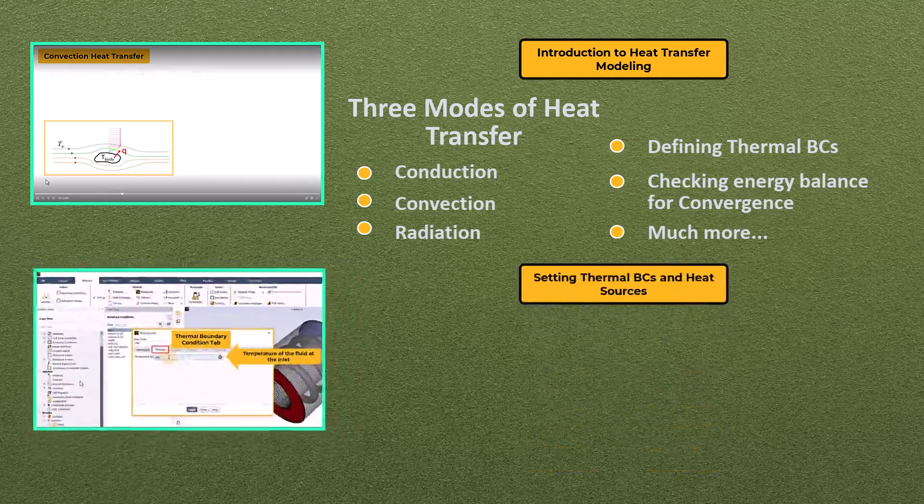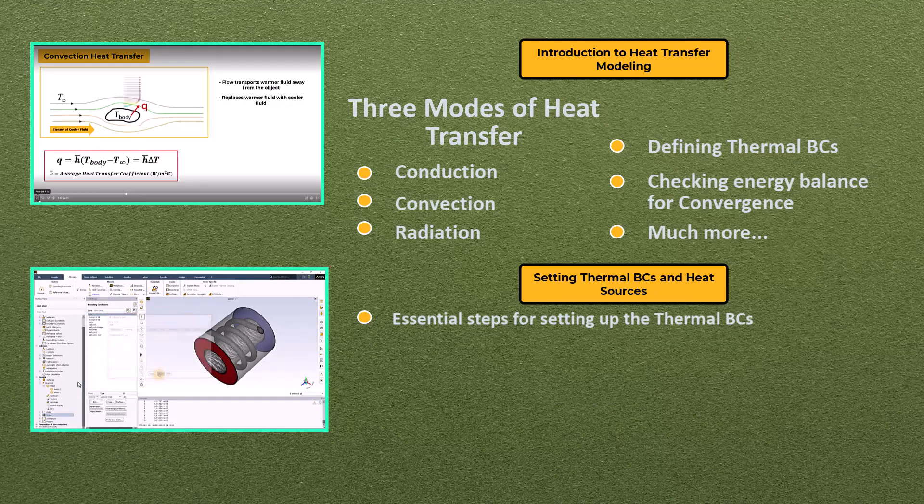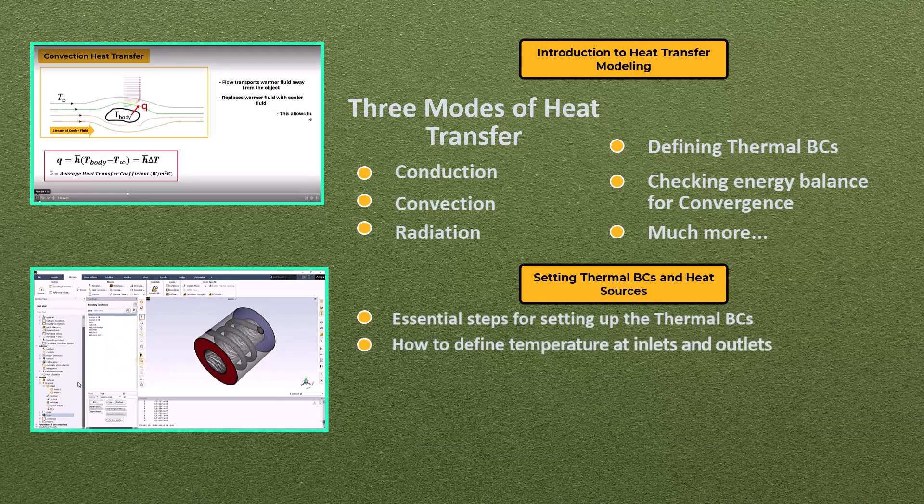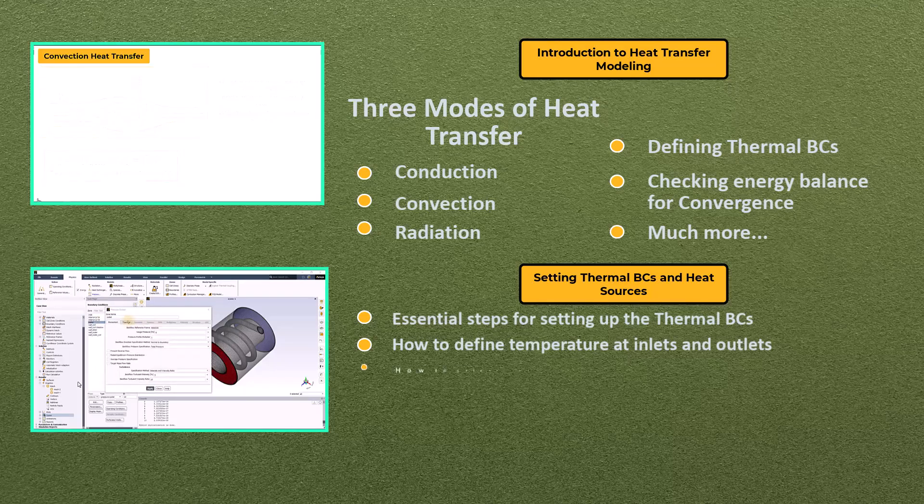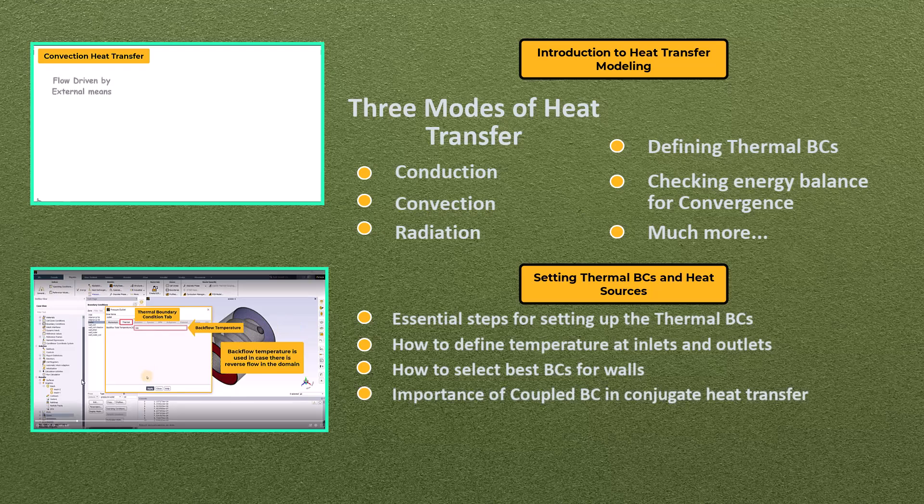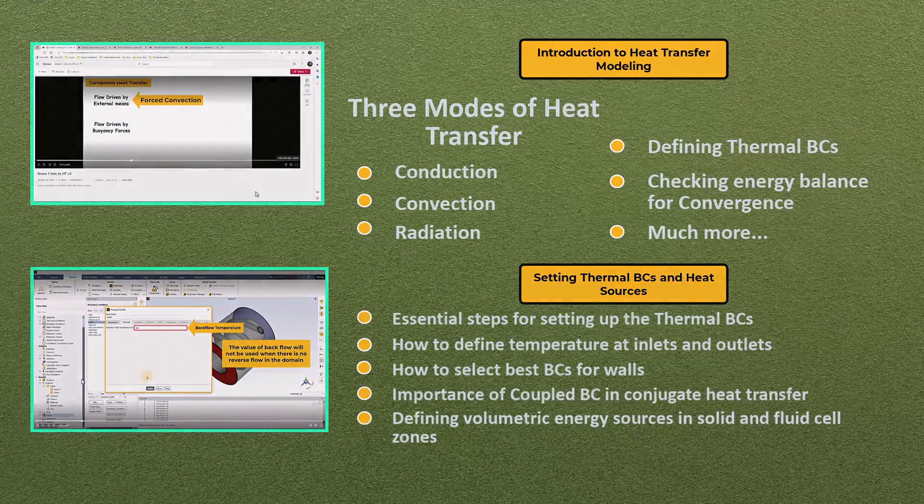In lesson 2, we will learn essential steps for setting thermal conditions for heat transfer problems. The focus will be on defining temperature at flow inlets or outlets, selecting the best boundary condition for walls, exploring the importance of coupled boundary conditions in conjugate heat transfer, and defining volumetric energy sources in solid and fluid shell zones.